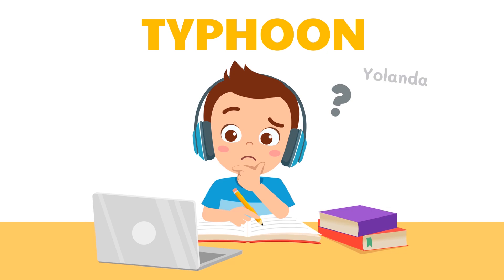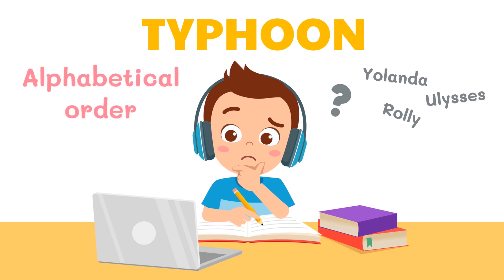You may also have wondered why typhoons have names like Yolanda, Rolly, and Ulysses. Typhoons last a long time and are given names so they can be identified quickly. In most places, the first storm of a year will have a name beginning with A, and the next one gets a name beginning with B, so they are named in alphabetical order. Weather scientists hold meetings to decide on new names for the next year. Names of storms which cause a lot of damage, such as Typhoon Yolanda, are never used again.